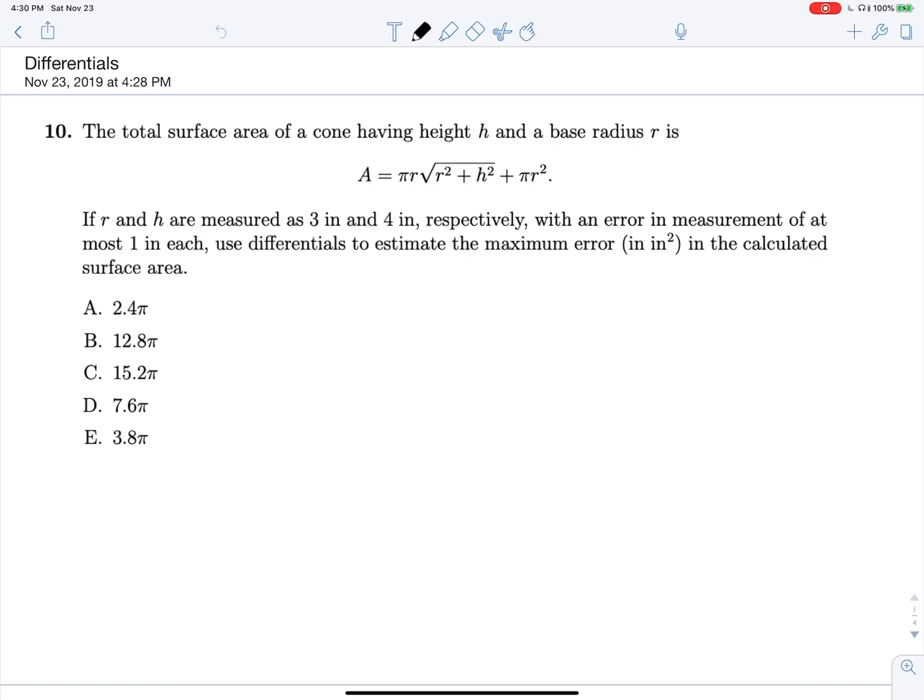We are given this equation for the surface area of a cone with height h and a base radius r. We're told that h and r are measured to be 3 and 4. But the maximum error in each of those measurements is 1 inch, and we're trying to find the maximum error that could have occurred. So it might help to draw this thing out. We've got some cone with height h and base radius r. We are looking for the maximum error possible if this is measured to be 3 and this is measured to be 4, where they could be up to 4, down to 2.